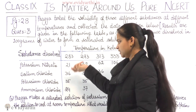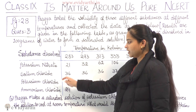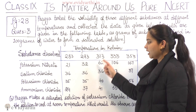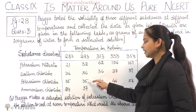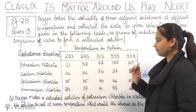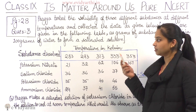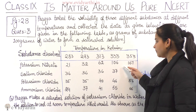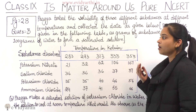For example, with potassium chloride: at 283 Kelvin, 35 grams dissolves in 100 grams of water as a saturated solution. As temperature increases to 293 Kelvin, solubility increases to 40 grams; at 333 Kelvin it is 46 grams; and at 353 Kelvin, 54 grams of potassium chloride dissolves in 100 grams of water.